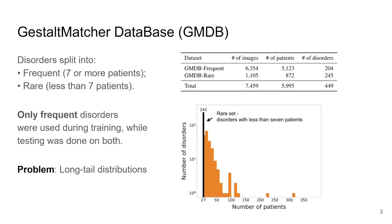A big problem with the dataset, however, are the long-tail distributions. Only very few classes have more than 50 patients, and that's even before splitting the data into training, validation, and test sets.